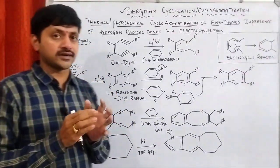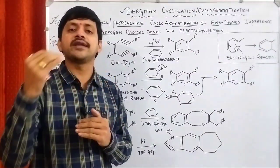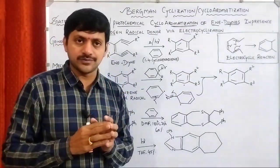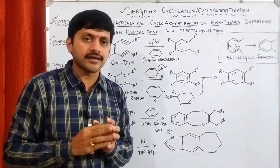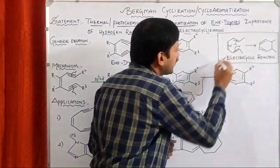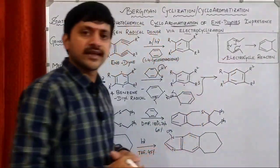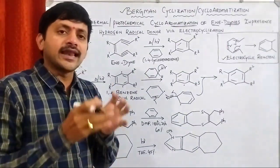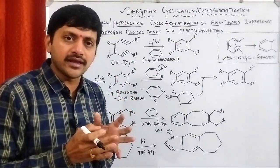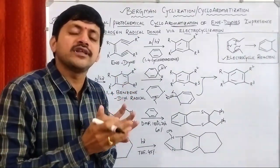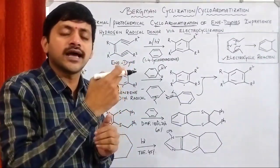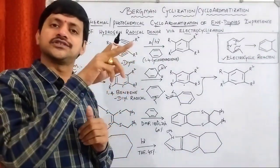Here we are using the concept called electrocyclization. We know that there are different kinds of pericyclic reactions. Among all types of pericyclic reactions, we have one commonly called the electrocyclic reaction. In an electrocyclic reaction, the non-cyclic compound is converted into a cyclic compound through electron transfer.